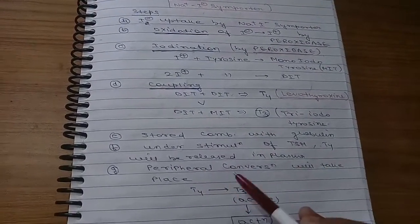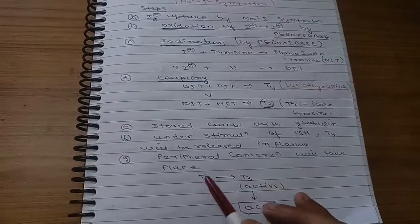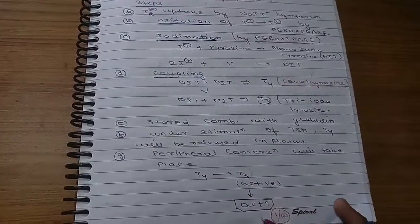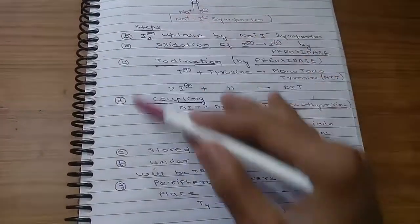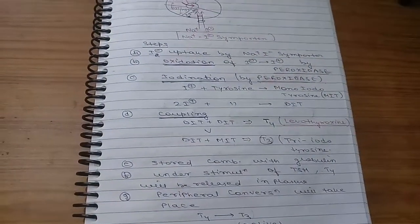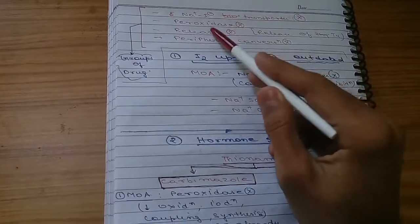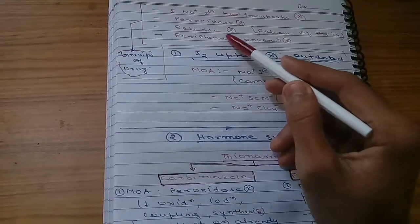The last is peripheral conversion, which means conversion of T4 into T3. This is the peripheral conversion and T3 will perform its action. So this is the physiology behind thyroxine hormone synthesis and its release.